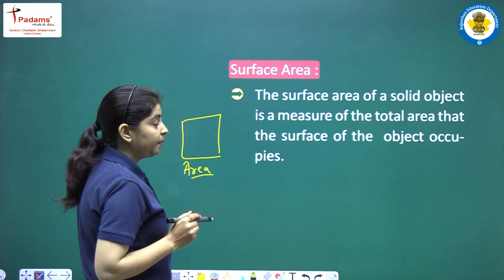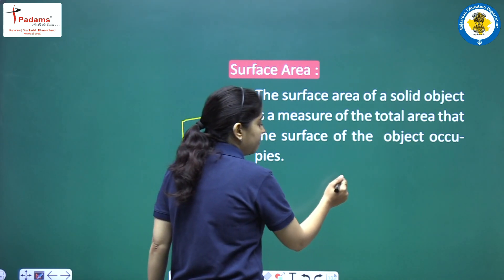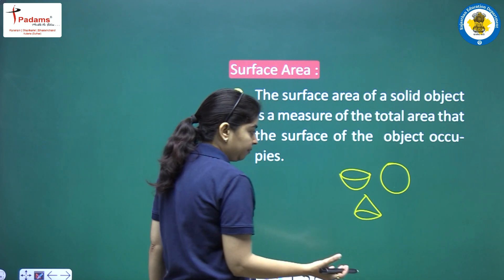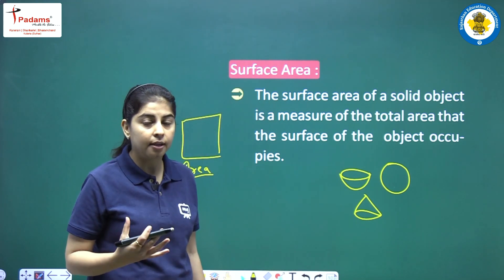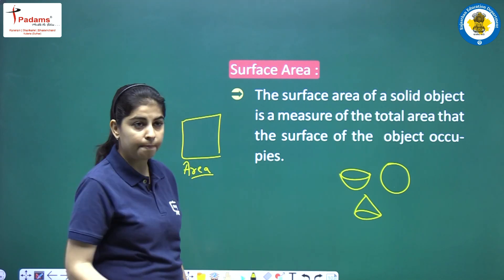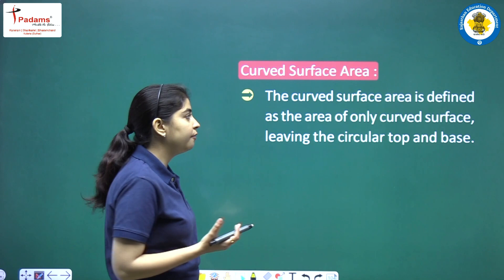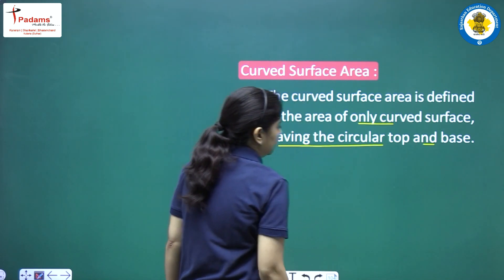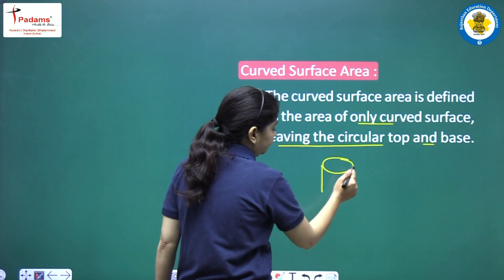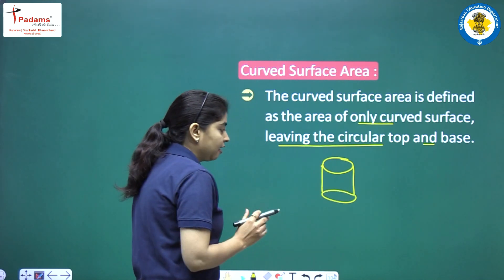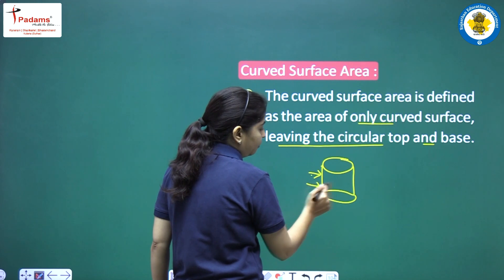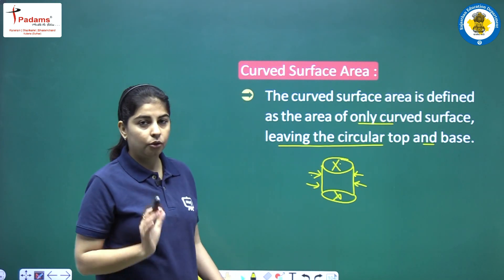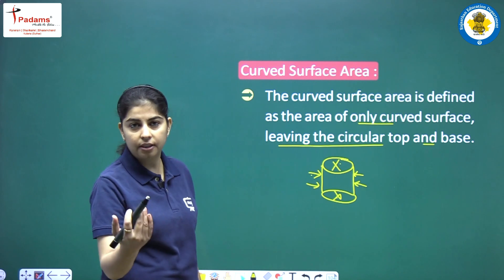But when we have a three-dimensional object — like a hemisphere, cone, or different shapes — we find the surface area. The curved surface area is defined as the area of only the curved surface, leaving the circular top and base. For example, if we make a cylinder, the curved surface area means just the curved part. The top and bottom are not considered — it is open. That curved part area is the curved surface area.